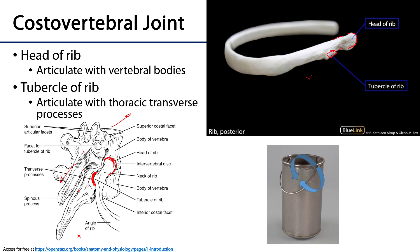We think of the bony thorax as protective, but we also need to consider that it's a dynamic space capable of expansion and relaxation. One way to conceptualize this is to think of the costovertebral joint as the hinge for a bucket handle — the handle can be elevated and then depressed back down. When elevated, there is more space between the handle and the bucket. Similarly, as the ribs expand upwards and outwards, the thoracic cavity gains more volume, which is important when we consider how the thoracic cavity affects ventilation.